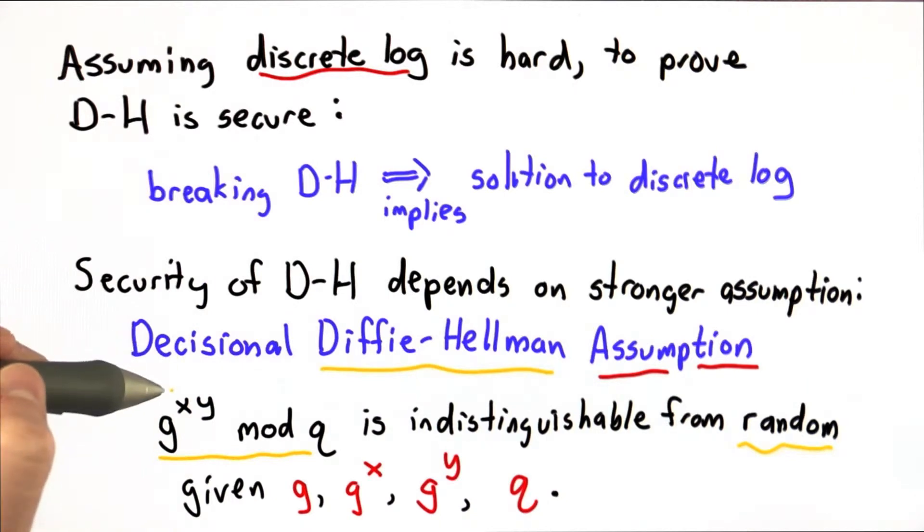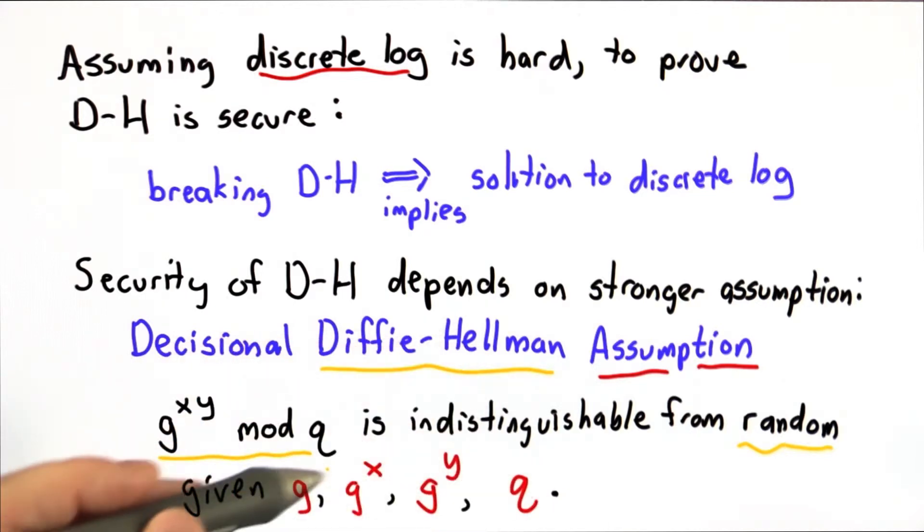So if this assumption is true, that would be enough to prove that the Diffie-Hellman protocol is secure, and then an attacker who eavesdrops on all the messages can't compute the key. Because what the assumption is stating is that there's no way that they could tell that that value, which is the correct key, is any different from a random number even when they have access to this information.